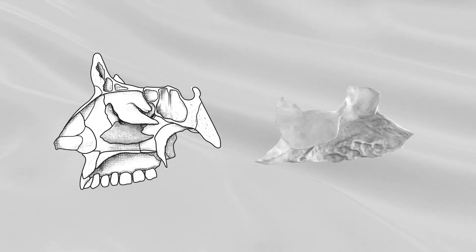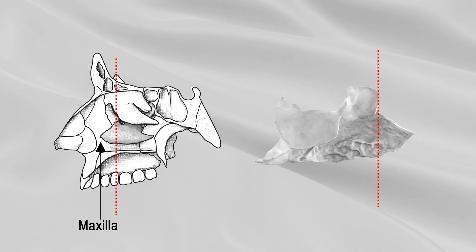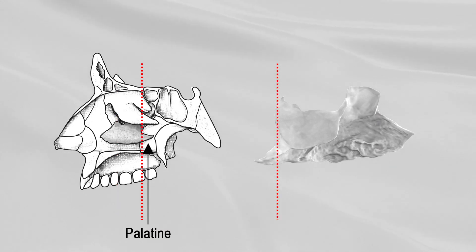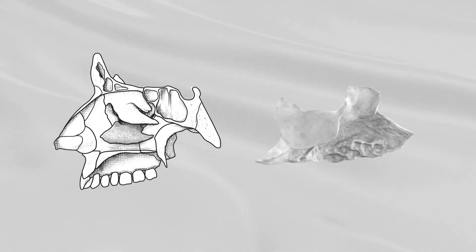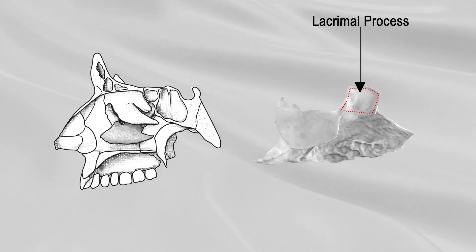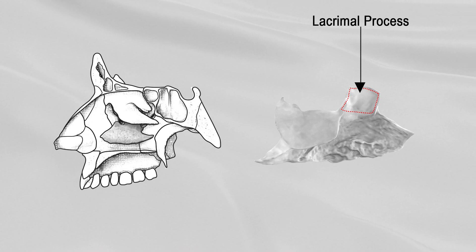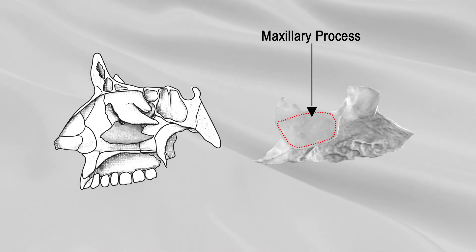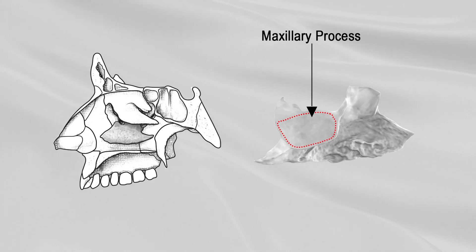The upper border may be divided into three portions. The anterior portion articulates with the maxilla. The posterior portion articulates with the palatine. The middle portion presents three well-marked processes. The lacrimal process articulates with the lacrimal bone and with the maxilla. The ethmoidal process ascends to join the uncinate process of the ethmoid. The maxillary process articulates with the maxilla and forms part of the medial wall of the maxillary sinus.